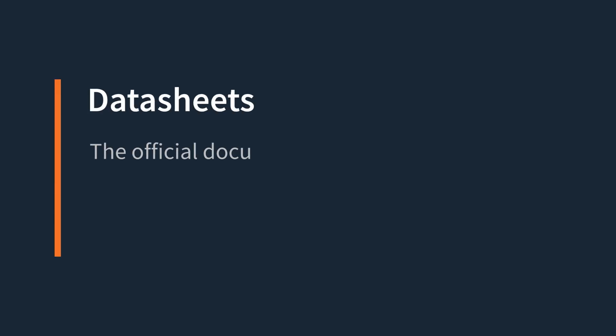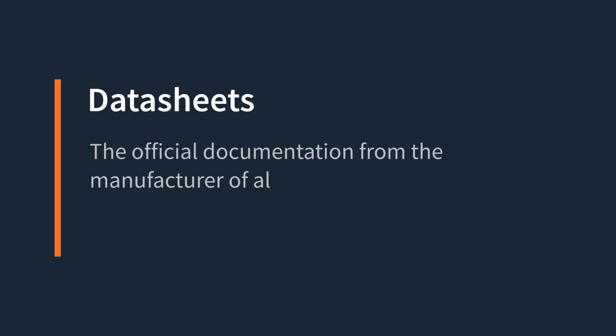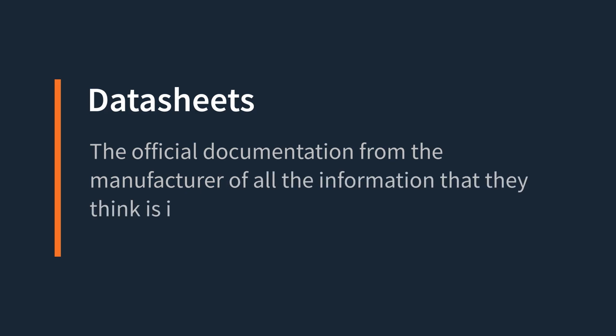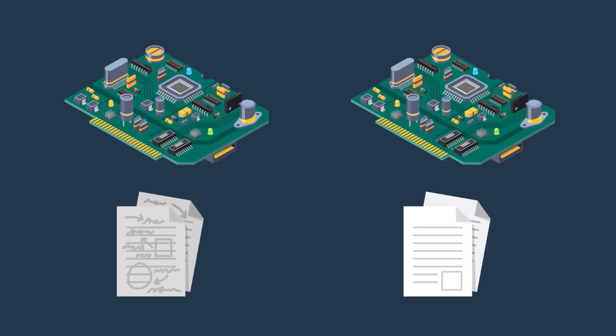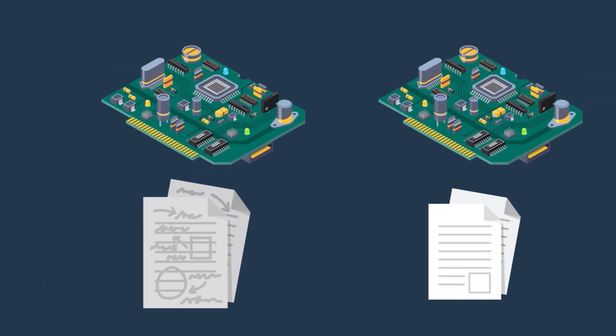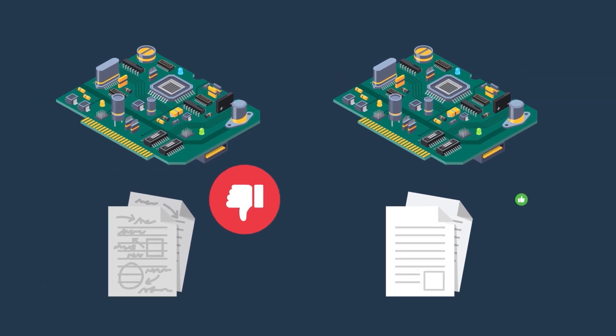So what are data sheets? Data sheets are the official documentation from a manufacturer of all the information that they think is important for you to know about their product. While it's usually not perfect, it is the reference for a particular part. It's interesting because what manufacturers consider important, what they include or don't include, and the format in which they share it can actually make a serious effect on my decision on what part to use.